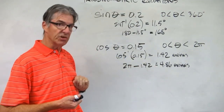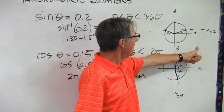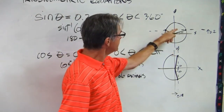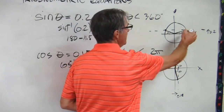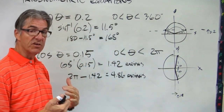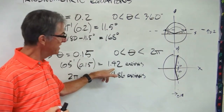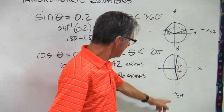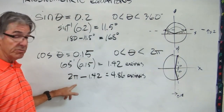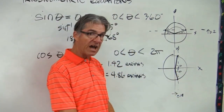Now pause the video and sketch the unit circle diagram for each problem. For the sine problem, theta is 11.5 degrees, which is 0.2 up off the x-axis, and the other angle is also 0.2 up — so it's 180 minus 11.5 degrees. For the cosine problem, 1.42 radians puts us pretty far up but not to 90 degrees, with x-coordinate 0.15 to the right of the y-axis. The other theta is 2 pi minus 1.42, also 0.15 to the right of the y-axis.